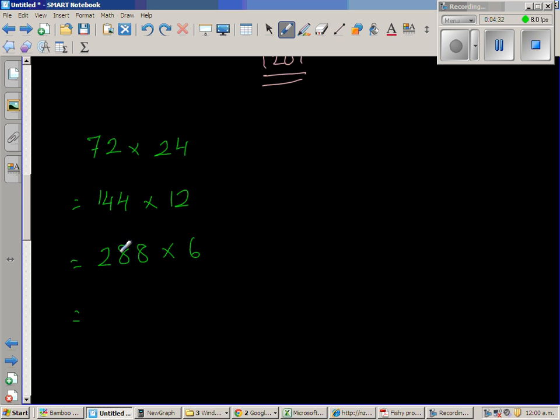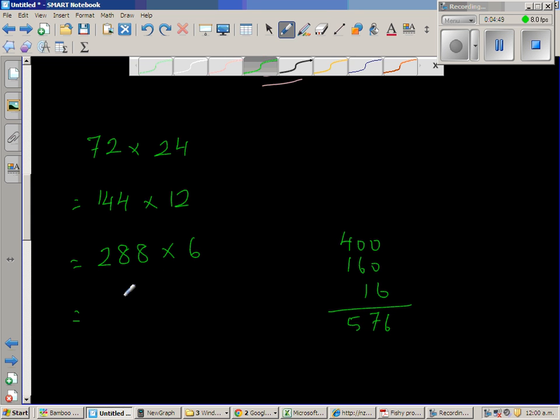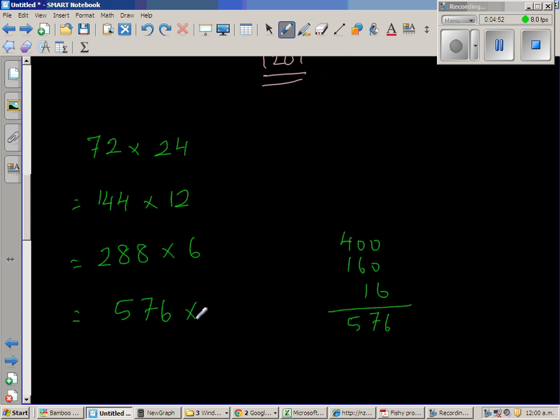So double of 200 is 400. Double of 80 is 160. And double of 8 is 16. So this is 576. So this is 576 times half of 6 is 3.